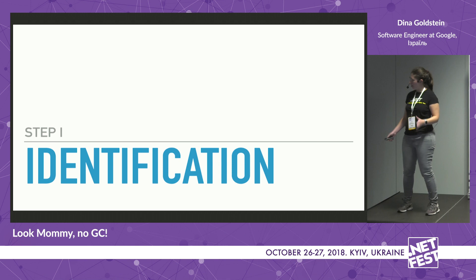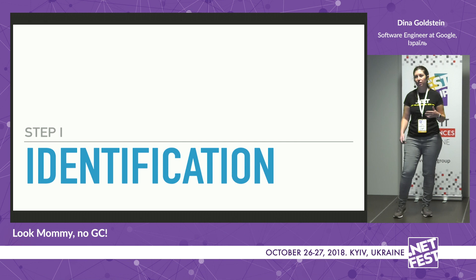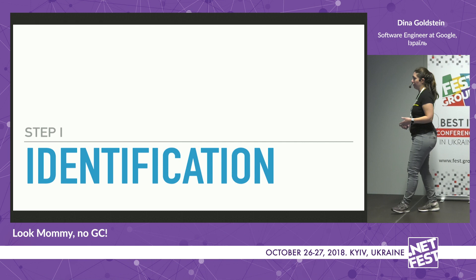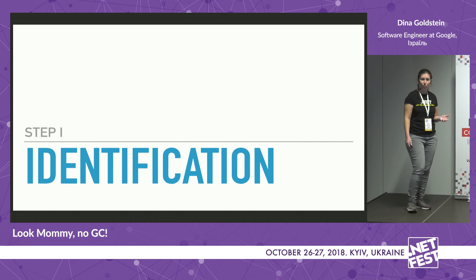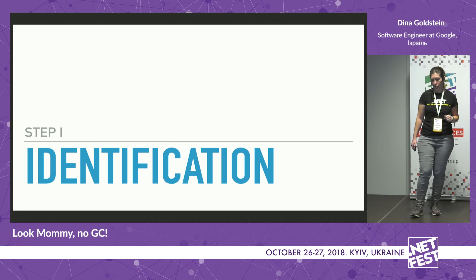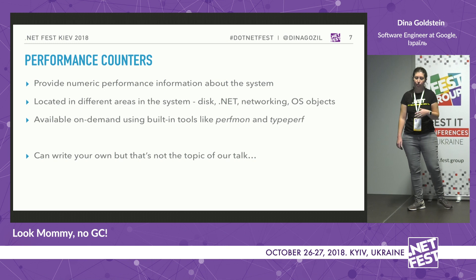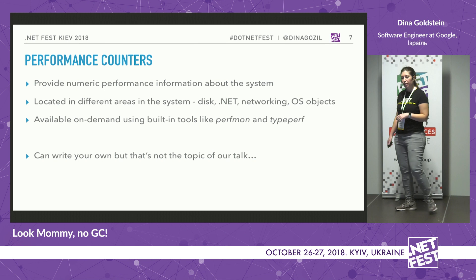So I think we're motivated enough. Let's talk about identification, because before we start optimizing, we have to know what our bottlenecks are — it's not necessarily memory problems. Let's look at a few tools and ways to find out what's going on memory-wise. The easiest way to monitor application memory performance, and performance in general, is performance counters.